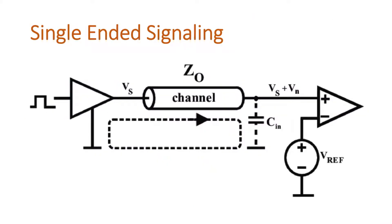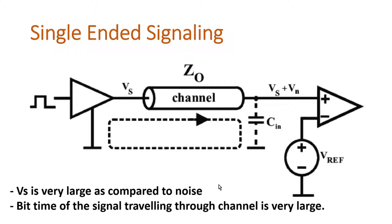Before understanding the crux of differential signaling, let me go through single-ended signaling first. This is the equivalent model of a single-ended signaling channel — this is a transmitter and this is a receiver. The transmitter transmits a signal with voltage Vs, and on the receiver side we receive Vs plus Vn, where Vn is a voltage induced by noise. Z0 is the channel impedance, and this capacitance represents the total accumulated capacitance of the channel plus the input capacitance of the receiver.